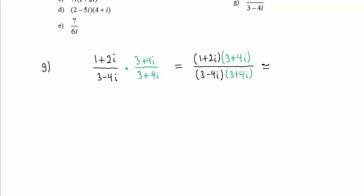In the numerator, we have 3 plus 4i plus 6i plus 8i squared. In the denominator, when we foil, we have 9 plus 12i minus 12i minus 16i squared.